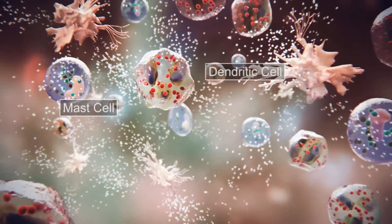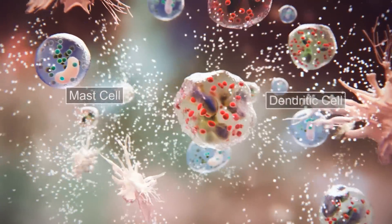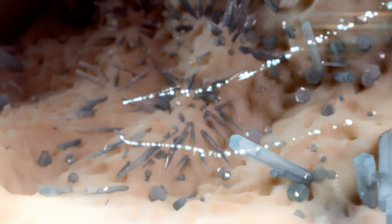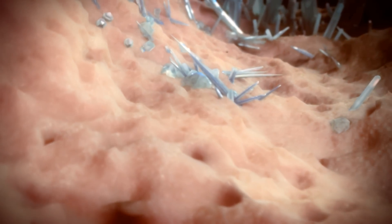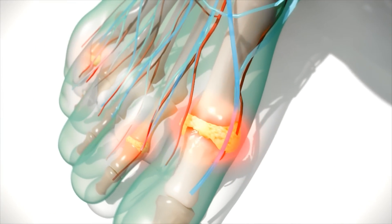Acute gout flares can last several days and usually resolve spontaneously. Without urate-lowering therapy, continued deposition of monosodium urate crystals may lead to visible tophus formation. Crystals in and around bony surfaces can perpetuate the inflammatory response and cause permanent bone and joint damage.